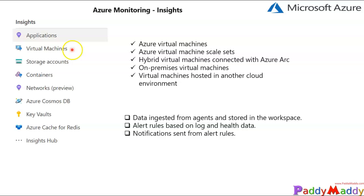Coming back to virtual machines, you will actually get the complete insights of the virtual machine's performance and health, along with virtual machine scale sets, including their running processes at a deeper level and dependencies of each virtual machine. It also covers the components it is communicating with, other virtual machines, and vital applications, identifying complete performance bottlenecks and network issues. This Insights capability is not just for Windows — it can also monitor Linux operating systems for virtual machines, virtual machine scale sets, hybrid virtual machines connected to Azure Arc, on-premises virtual machines, and virtual machines hosted in other cloud environments.